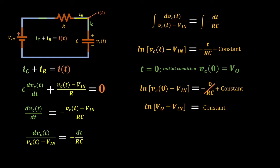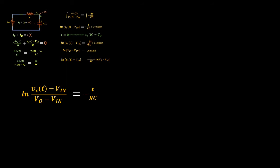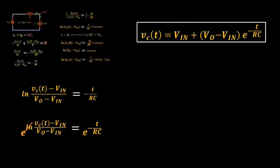Now we can put back the value of our constant into our equation. Then, we can group the like terms of natural logarithm, and by applying the properties of logarithm, we will end up with this equation. We can use both sides of the equation as the exponent of E, so that it will cancel out the natural logarithm. And for the manipulation of our formula, we will end up with the voltage across the capacitor equivalent to the input voltage, plus the quantity initial output voltage minus the input voltage, multiplied with E raised to the negative T all over RC.